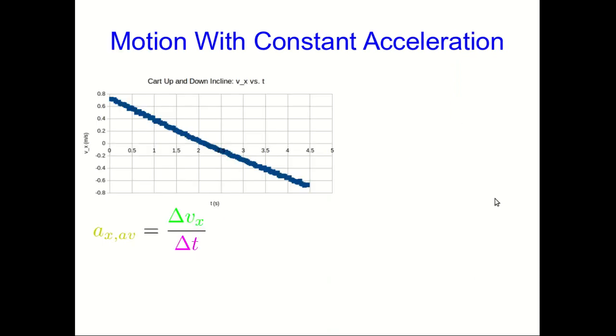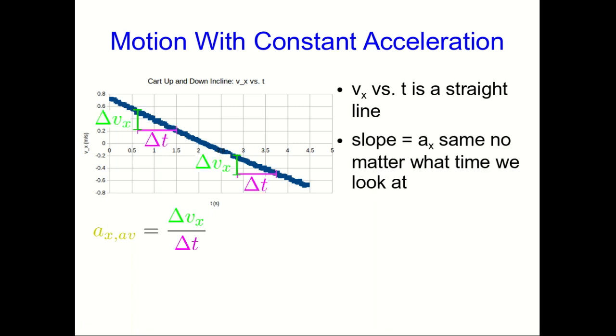This motion of the cart up and down the incline turns out to be an example of a very important special case, which is motion with constant acceleration. Notice that the vx versus t is pretty much a straight line. And so one of the consequences of that is that no matter what time region you use, whichever delta t you choose to get your acceleration, you're going to come up with about the same answer. And so the average acceleration is just the same as the instantaneous acceleration. So we can just drop the average. Now that's going to turn out to be really handy. And so whenever we can approximate the acceleration as constant, it'll be useful to do so.